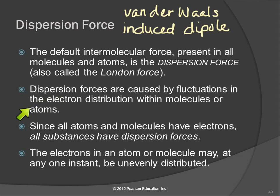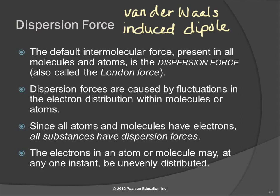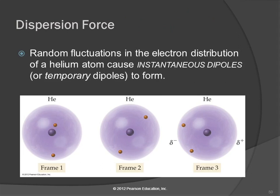Dispersion forces are caused by fluctuations in the electron distribution within the molecule or atom. All atoms and molecules have electrons, so all substances have dispersion forces. At any given instant, the electrons in an atom or molecule can be unevenly distributed. Consider helium: it has two electrons in an electron cloud 90% of the time. Most of the time they're spread out, but occasionally both could end up on the same side of the atom spontaneously.